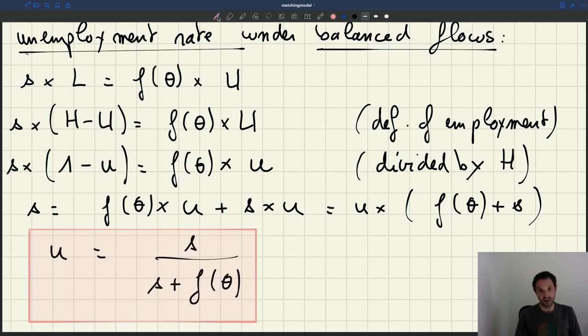That measure will be very, very close to the true measure of unemployment. So actually that equation that we just derived is very accurate in the data. We have made an assumption that flows are balanced, but that assumption is very accurate in reality.